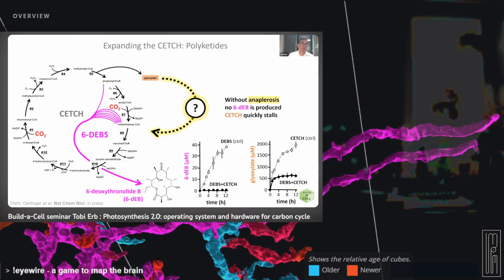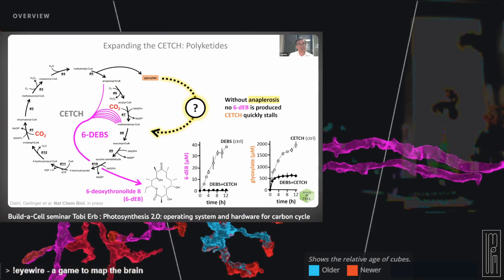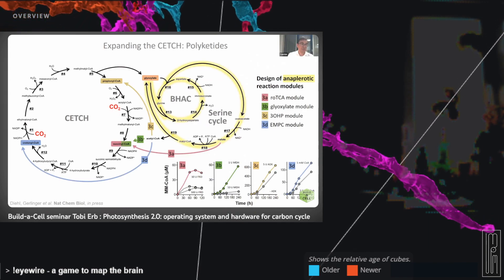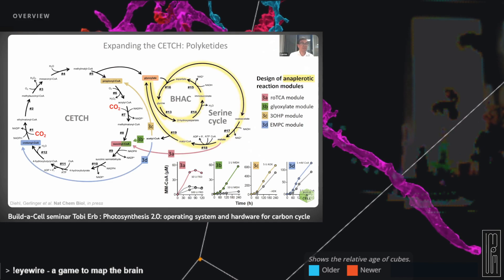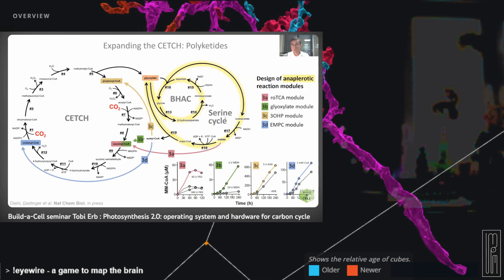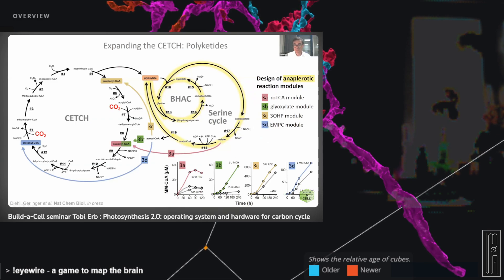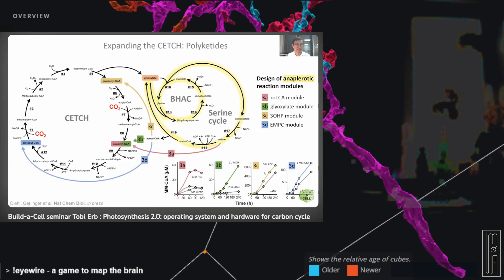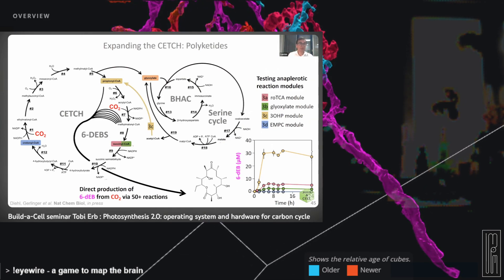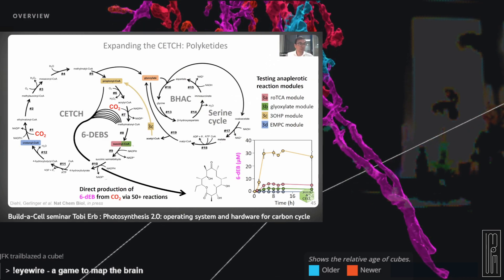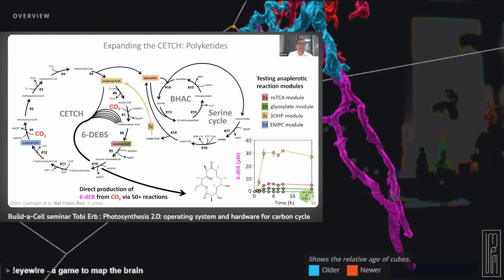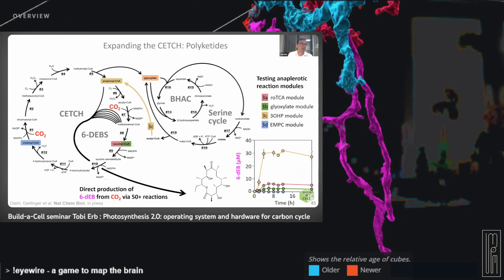We came up with anaplerotic modules that allow us to convert CO2 fixation products back into molecules of the cycle. Chris and Patrick designed and tested many different anaplerotic reaction modules, and identified that the 3-hydroxypropionate module worked quite well. After further optimization, we could show that by implementing this anaplerotic feedback in the metabolic network, we can achieve production of six-deoxyerythronolide B directly from CO2. We now coordinate over 50 reactions in time and space to convert inorganic CO2 directly into this complex chemical molecule.